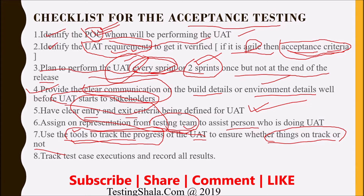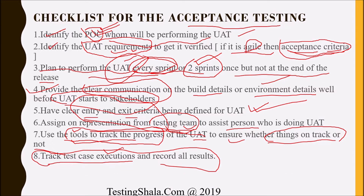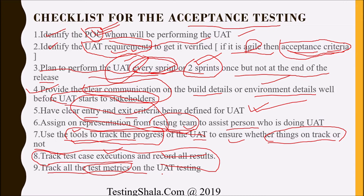The eighth item to validate as part of acceptance testing is to track all executions, records, and results. Once the UAT team starts executing test cases, we should be able to track everything in the tool, looking step by step at where issues are occurring and what the results are for those failures. The ninth checkpoint is to track all the test metrics agreed between the end users performing UAT and the stakeholders who will sign off on the release, so there is a clear understanding of what metrics are being tracked.